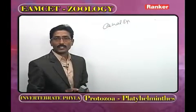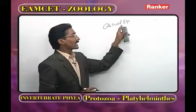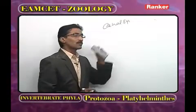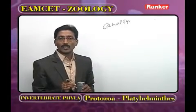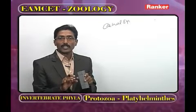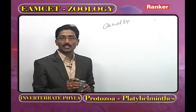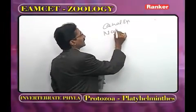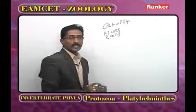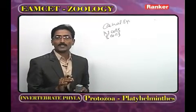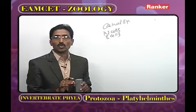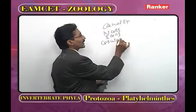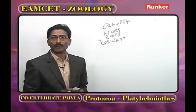Porifera are the most primitive multicellular animals in kingdom Animalia. They are called Porifera because many pores are present on their body — they are pore-bearers. Nerve cells and sensory cells are totally absent, so there is no coordination and integration among cells. Therefore Porifera have a cellular grade of organization.